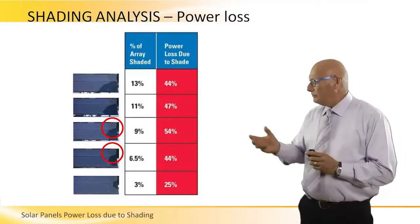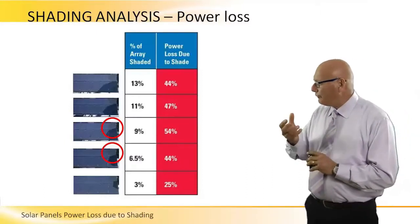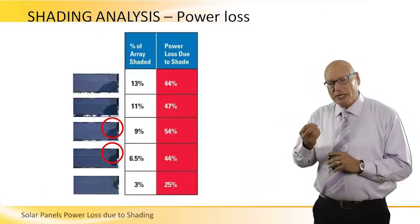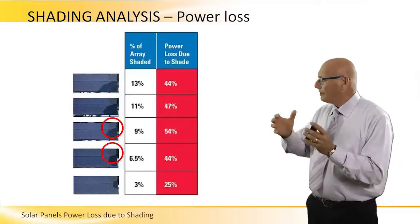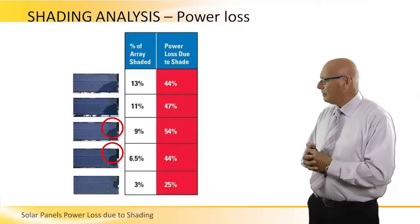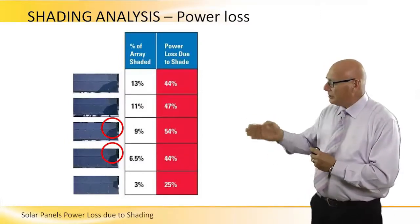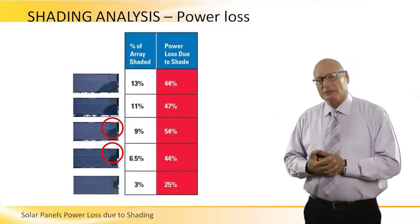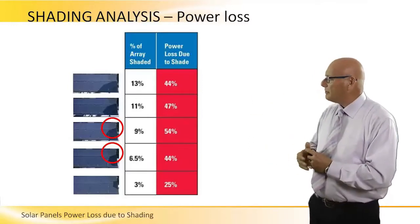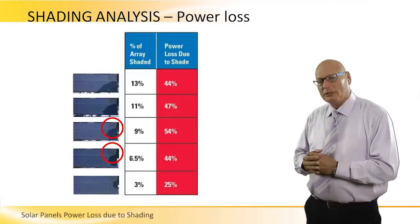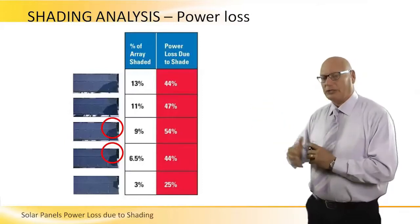This table represents the effect of shading on a panel or on an array of panels. On the left hand side we see arrays of panels. The left column is percent of array shaded, and the right column is the power loss due to the shade.